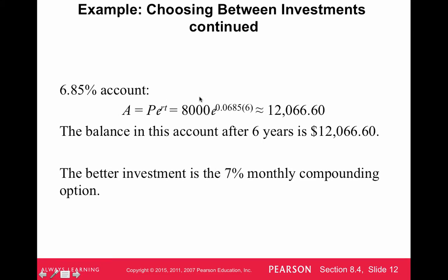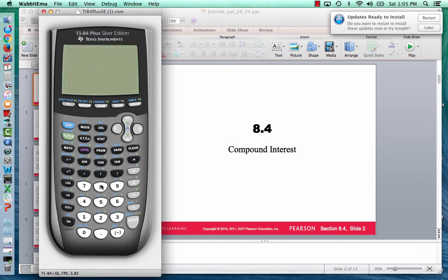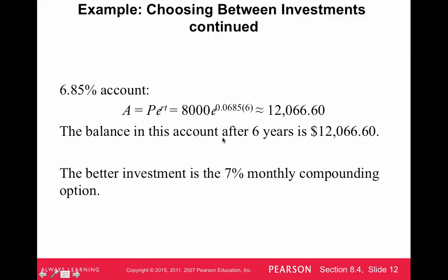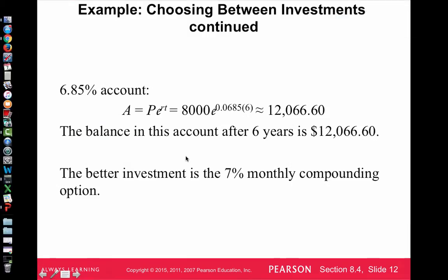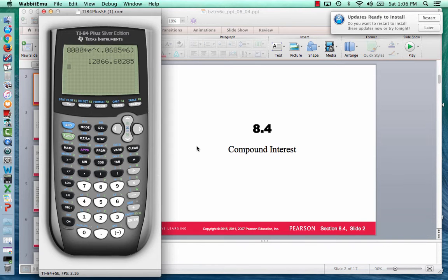Now for the continuous compounding option — the interest rate is 6.85%. To find E in your calculator, you press 2nd and then the LN button; that works for both the TI-83/84 and the TI-30X2S. So we enter 8,000 times E to the power of 0.0685 times 6 years, which gives us $12,066.60.